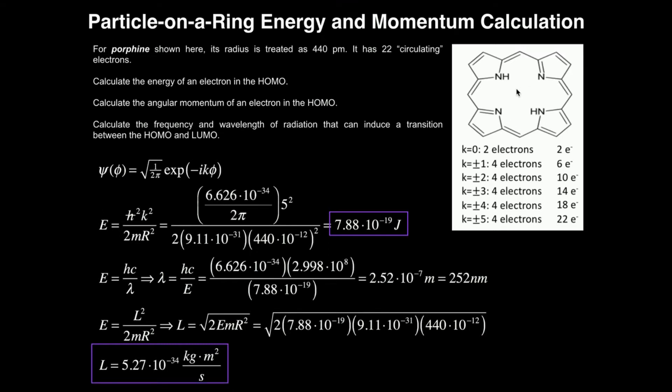This is actually a derivative of a biological molecule called heme, which I have plenty of videos on in my channel. For porphine, its radius is going to be treated as 440 picometers, and in terms of all these conjugated pi electrons, it has 22 total, so 22 circulating electrons.